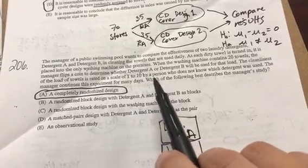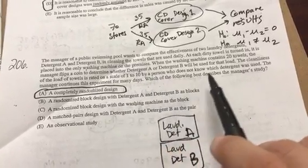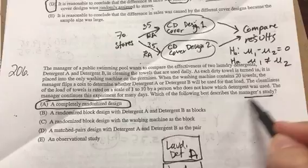The cleanliness of the towel is then rated on a scale of 1 to 10 by a person who does not know which detergent was used. The manager continues this experiment for many days. Which of the following best describes this study? Similar to the last problem, this is a completely randomized design.